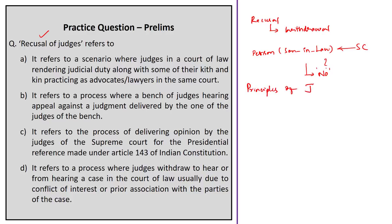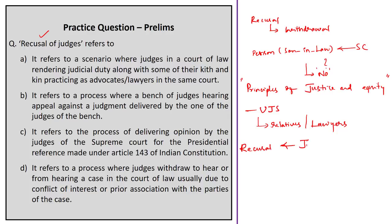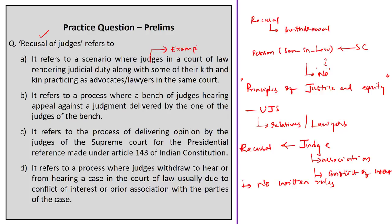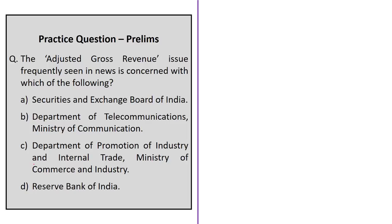This is because principles of justice and equity demand that justice shall not only be done but should also appear to have been done. This is one example of the uncle judges syndrome — relatives of judges practicing as lawyers in Supreme Court is another such example. In higher judiciary in India, there are no written rules on the recusal of judges or requiring them to state reasons for recusal. For the practice question, option A is an example of uncle judges syndrome, while option D refers to recusal of judges — therefore option D is the correct answer.